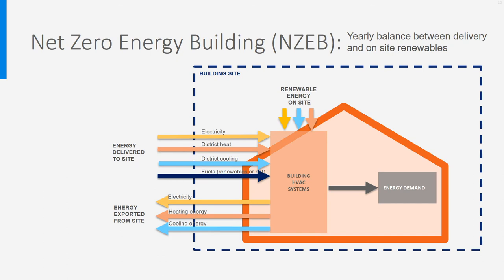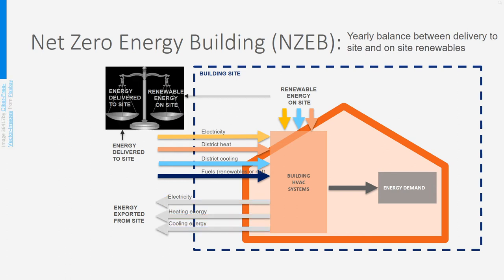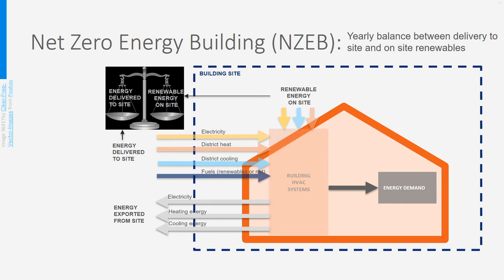Net zero energy buildings, so-called NZEBs, are based on achieving a balance between the energy delivered to the site and renewable energy produced and used on-site. Energy delivered to the site must equal renewable energy produced on-site. This concept recognizes that renewable energy is intermittent — the possibilities vary from hour to hour and season to season. For instance, solar electricity is produced during the day while you need lighting at night, and solar boilers produce a lot in summer while you need space heating in winter. Without large batteries or grid use, it is currently very difficult to bridge this mismatch, especially in cold countries.